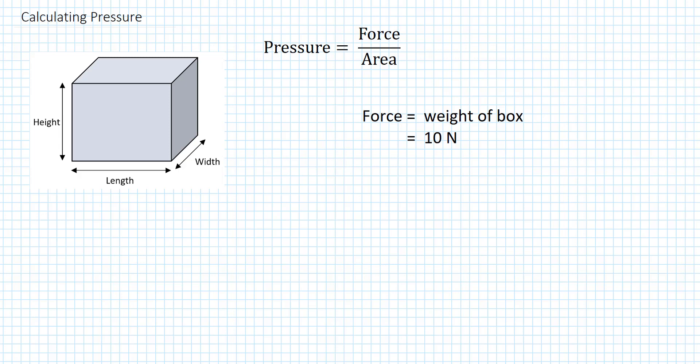So gravity is pulling the box down with the force of 10 Newtons and the box is not going down because the table is in the way. The table is pushing up on the box with that same force. So the force on the table is the weight of the box, 10 Newtons.